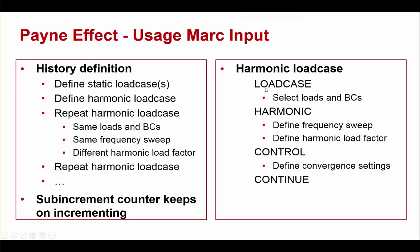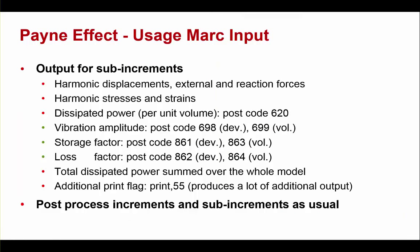For each harmonic load case, define the load case option to select loads and boundary conditions, the harmonic option to set frequencies, the harmonic load factor, and the control option for convergence settings. Harmonic results include the usual displacements, external and reaction forces, stresses and strains, and dissipated power — plus new outputs: vibration amplitude, storage and loss factors, and total dissipated power summed over the whole model. These results can be post-processed as contour plots or history plots with any post-processor using increment and sub-increment data.